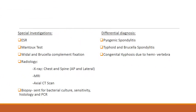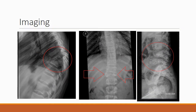The special investigations for spinal tuberculosis include an ESR, Mantoux test, Vidal and Brucella complement fixation, radiology investigations such as an x-ray, MRI or axial CT scan, and biopsy for culture sensitivity, histology and PCR. The differential diagnosis for TB spine includes pyogenic spondylitis, typhoid and brucella spondylitis, and congenital kyphosis due to hemivertebra. Here are some examples of x-ray and MRI findings consistent with TB spine.